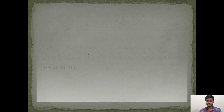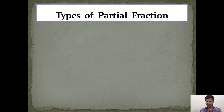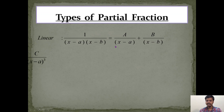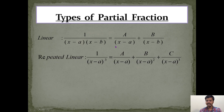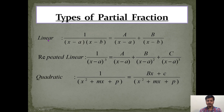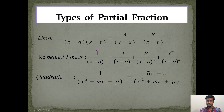There are three different types of partial fractions: the first is linear, the second is repeated linear, and the third is quadratic. As the names suggest, linear means there are linear factors in the denominator, repeated linear means the same factor is repeated multiple times in the denominator, and quadratic means a quadratic expression is in the denominator.